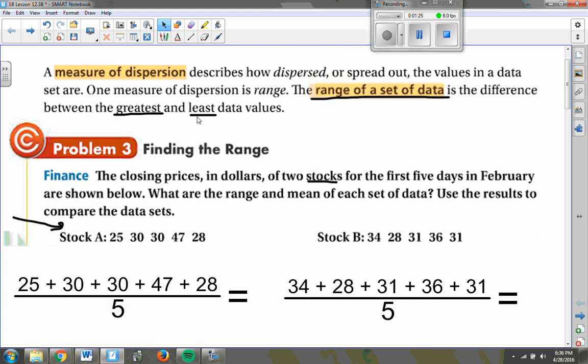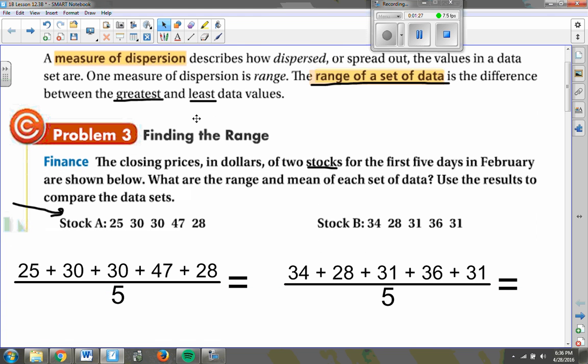I just follow my usual mean formula, which says to add all these things up and then divide that all by five. And what I end up with is $32. So the mean of stock A's dollar values at the end of these days is $32.